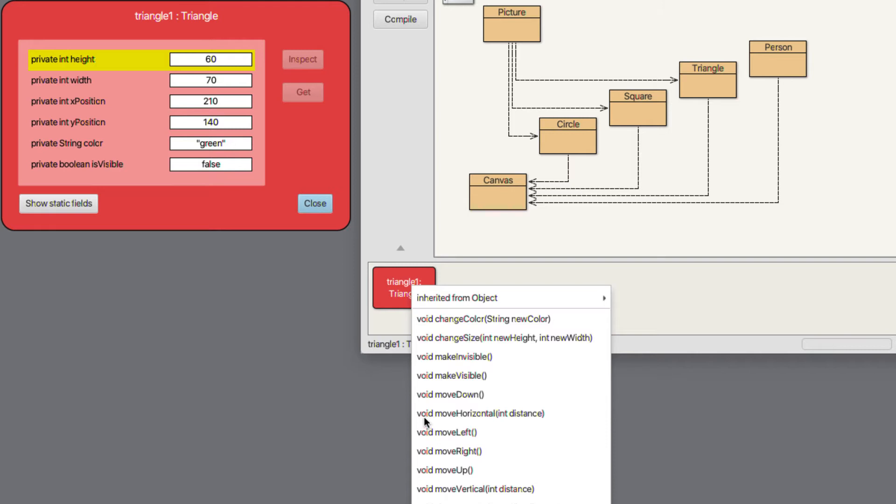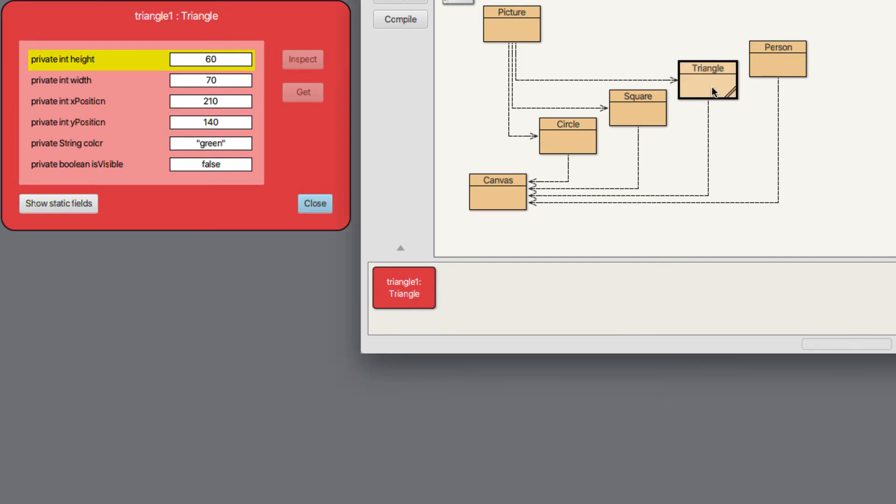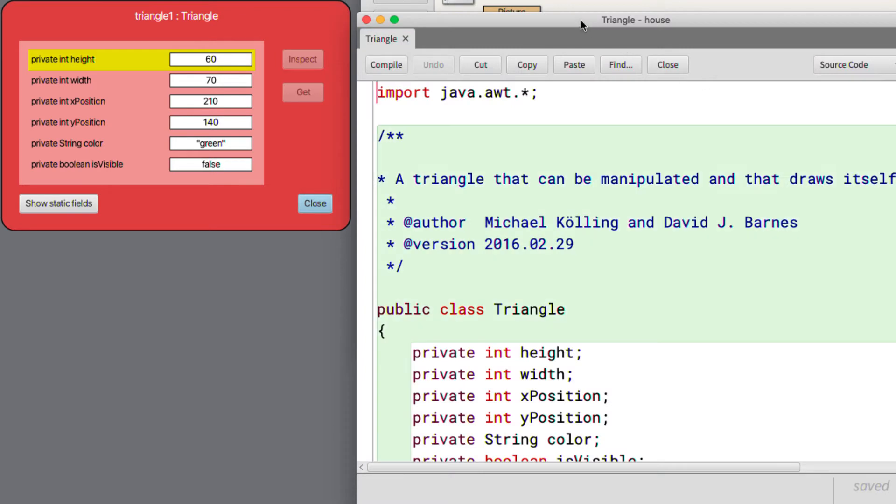So these methods and the data values we see in the inspector are there because of the source code that we've written for the triangle class over here. And we can see that if we open up the source code of the triangle class.